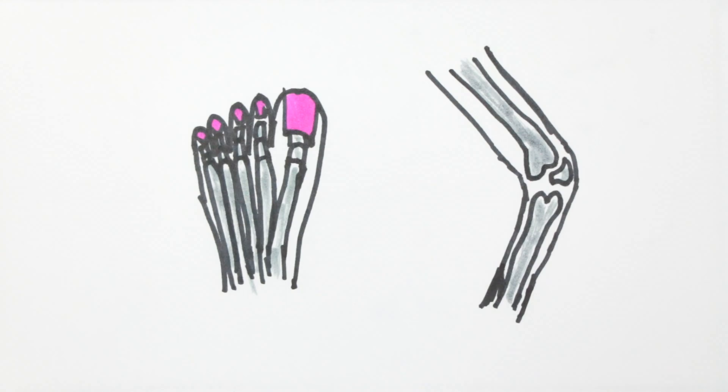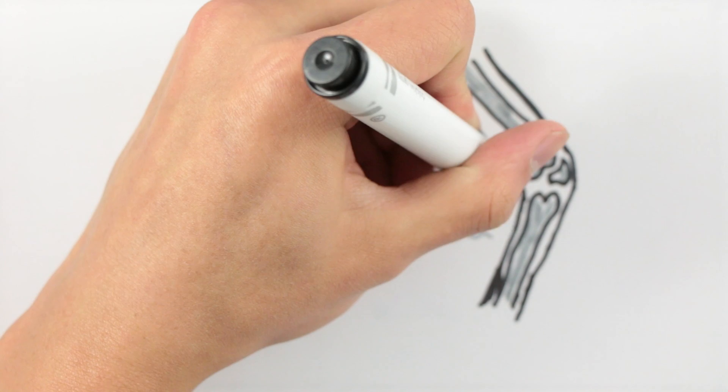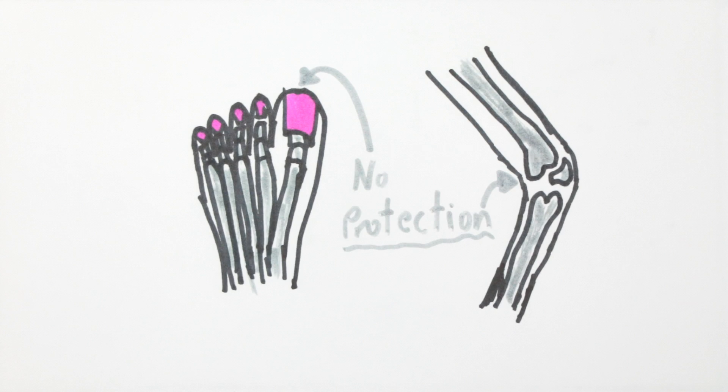Also, our toes are like our knees in that there's very little tissue, so there's only bone which isn't so soft to cushion the blow of the table on your foot.